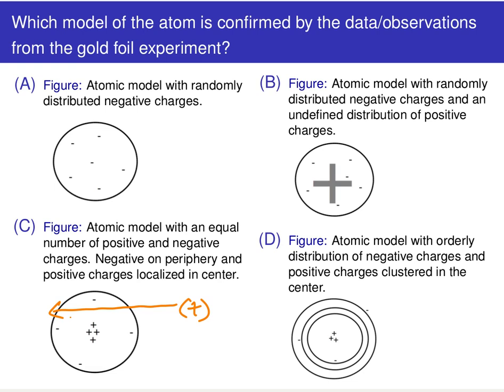The fact that the vast majority of those positively charged particles passed right through without being deflected indicates that the positive charges present in those gold atoms must somehow be localized to only certain regions of space.